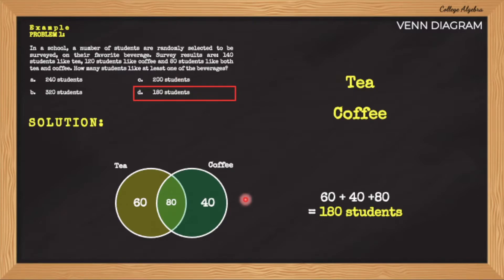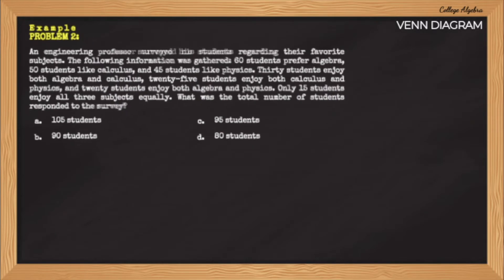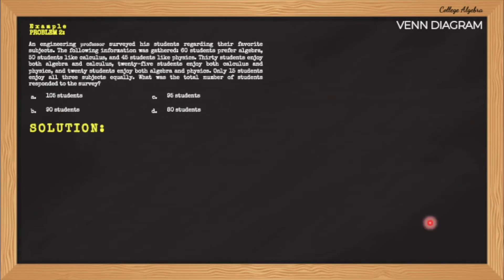Let us now solve another problem. For example problem number two: An engineering professor surveyed his students regarding their favorite subjects. The following information was gathered: 60 students prefer algebra, 50 students like calculus, and 45 like physics. 30 students enjoy both algebra and calculus, 25 students enjoy both calculus and physics, and 20 students enjoy both algebra and physics. Only 15 students enjoy all three subjects equally. What was the total number of students who responded to the survey? Unlike in example problem number one, we have three different sets of items in this problem: algebra, calculus, and physics.